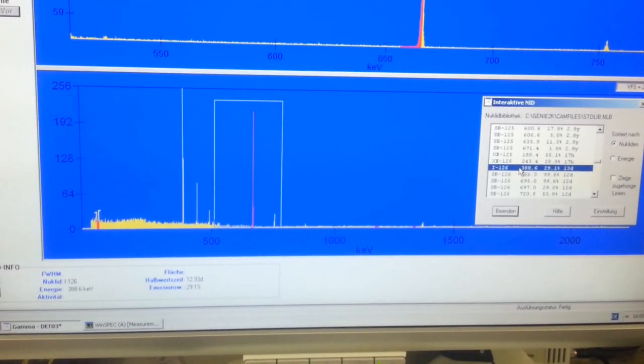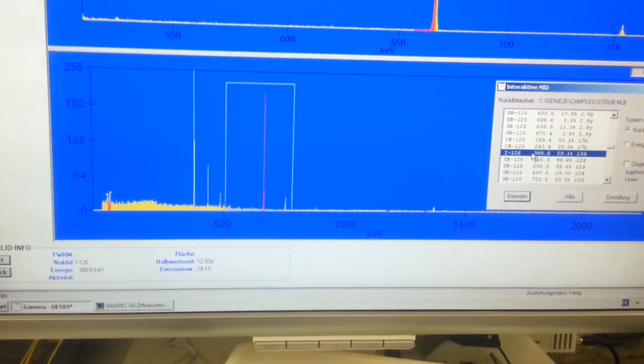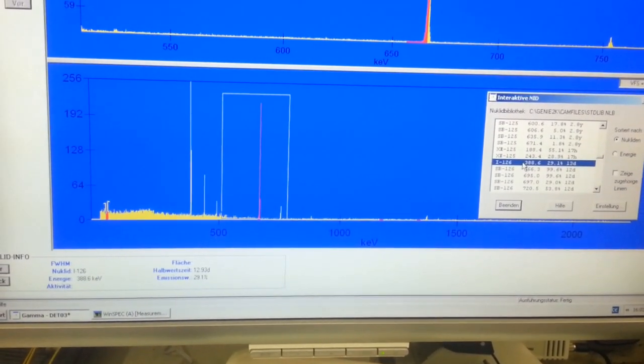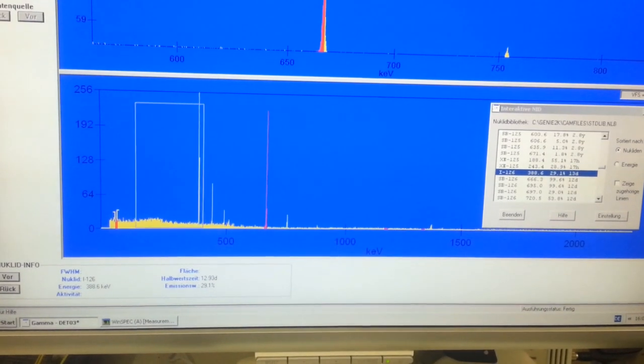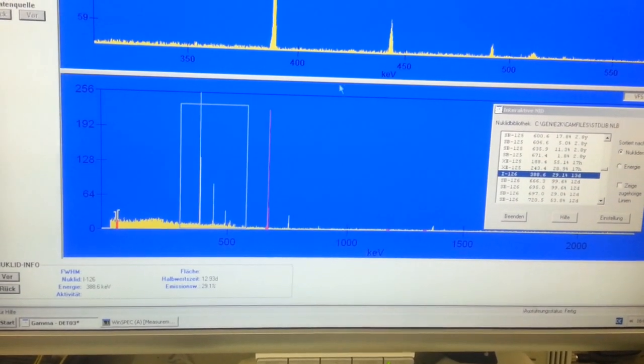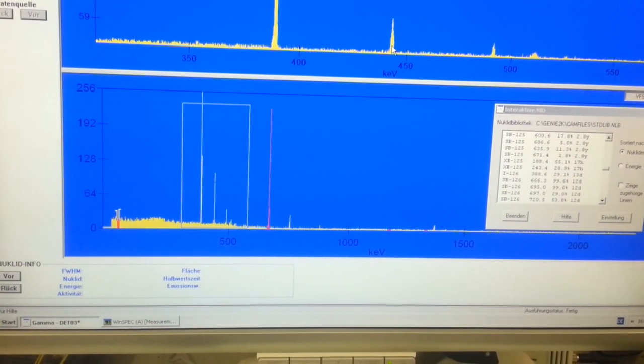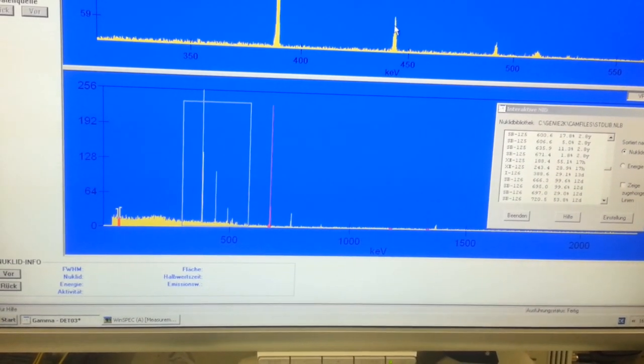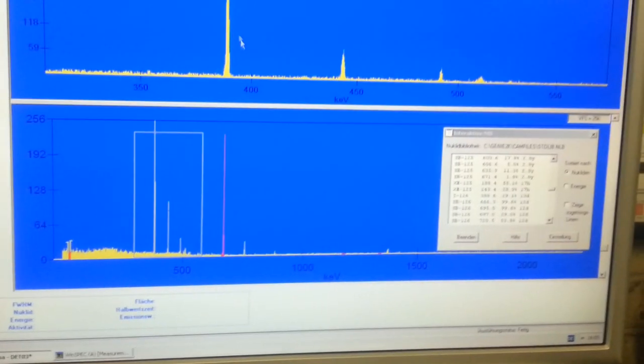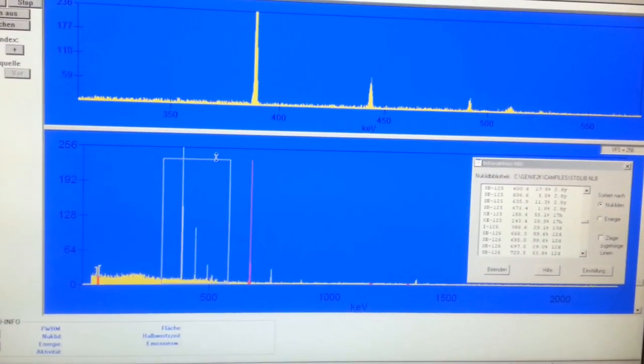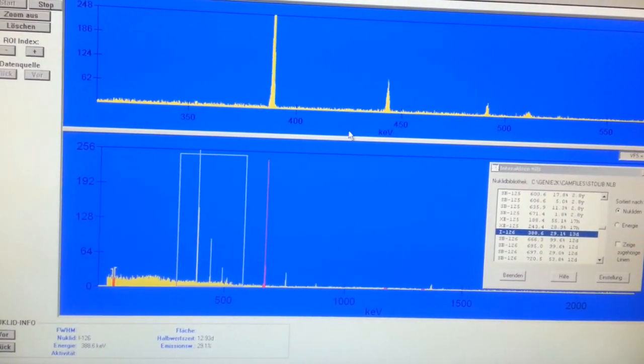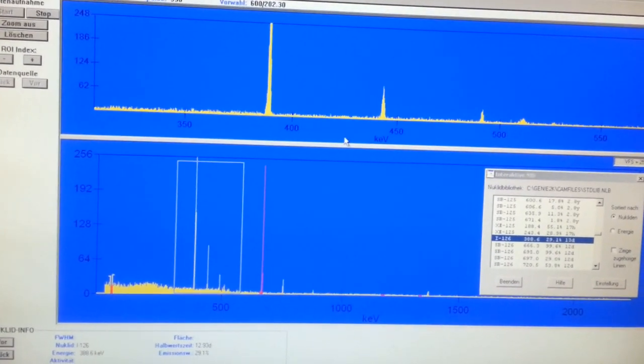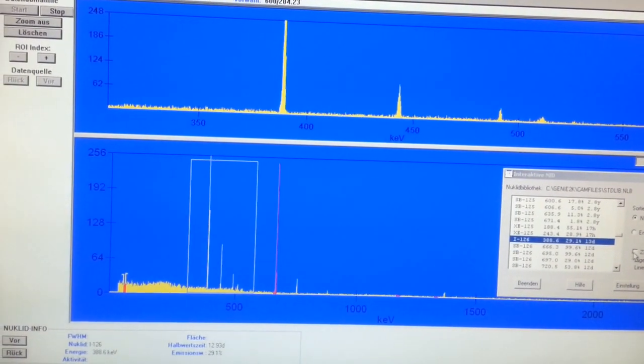Iodine from the scintillator is a monoisotopic element. It only consists of one isotope, that is stable iodine-127. But what we can detect here are the characteristic gamma energies that belong to iodine-126. So that means that the photon beam actually removed a neutron from the core, which was most likely the weakest bound nucleon, and thus turned it into radioactive iodine-126.